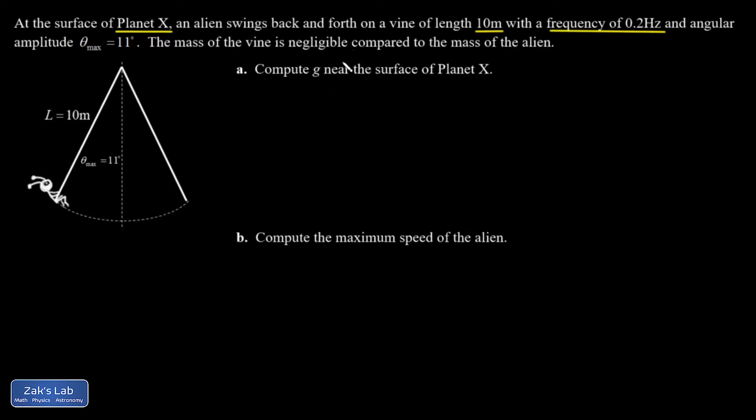So first I want to get G near the surface of planet X. And the point here is that I'm trying to use the period formula for a simple pendulum. And I want to turn this around and solve for G. So I divide by 2π and then I square it. That gives me L over G. And then multiply both sides by G and multiply by the reciprocal of T over 2π all squared. And G is equal to L times 2π over T all squared.